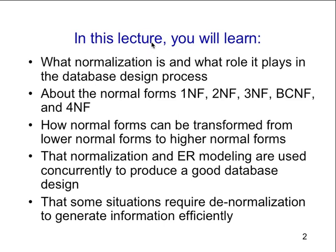Normalization also ensures the correctness of the data because you're relying upon this database to give you answers to questions. If you have really bad data and a bad structure, it's not going to give you good answers — it's going to give you wrong answers. So you want it to hold good information. We'll be talking about what makes something in first normal form, second normal form, third normal form, BCNF, and fourth normal form.